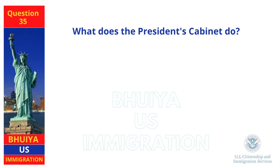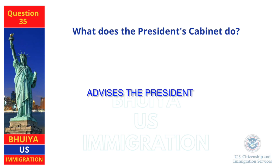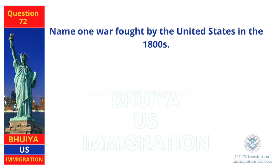What does the president's cabinet do? Advises the president. Name one war fought by the United States in the 1800s. Civil War.